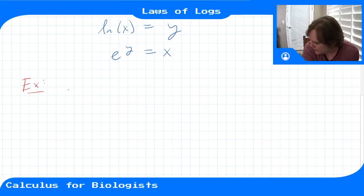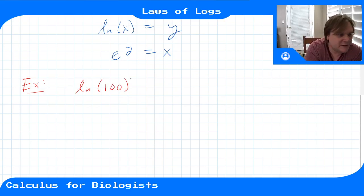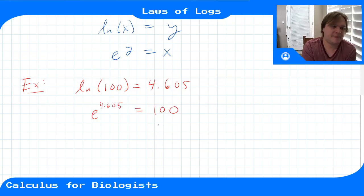So an example would be, let's say, ln(100). If you plug this into your calculator, you'll get that this is equal to 4.605. And how does it know that? Well, it checks what exponent of e gives us the value 100. So you look at a graph of e and find the x value, which is 4.605, that gives me the value 100.